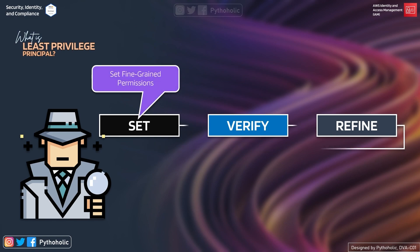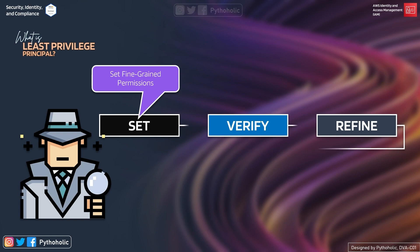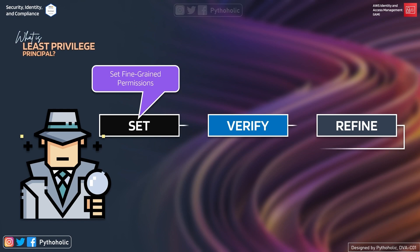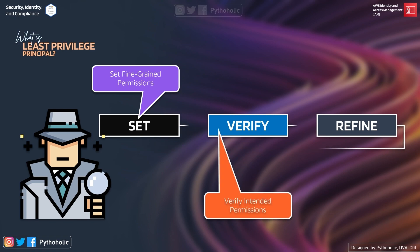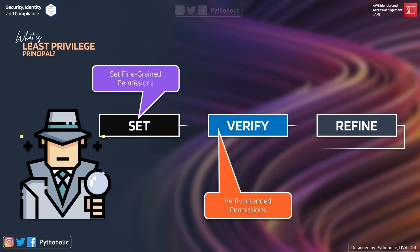First, we need to set fine-grained permissions by using policies and permissions. We grant users and resources the level of access permissions for them to perform the required operations. In IAM, you write policies and permission data and assign them to users and roles so that they can perform the operations they need.